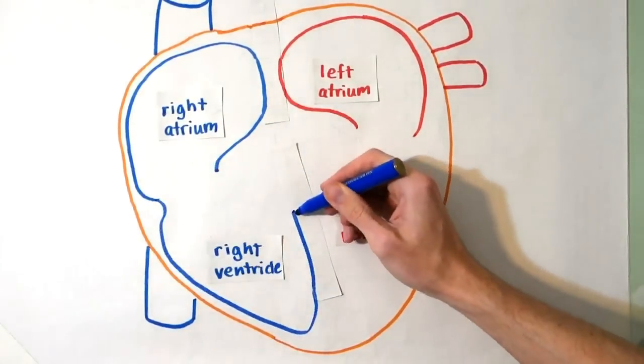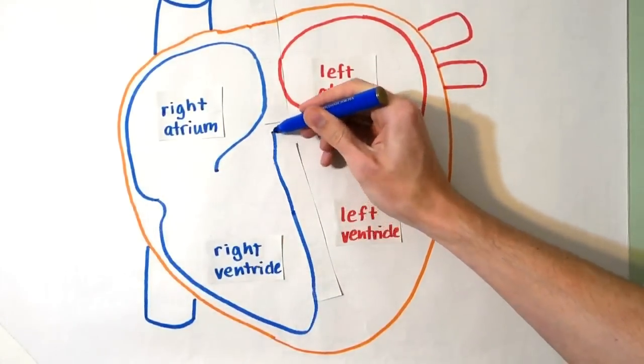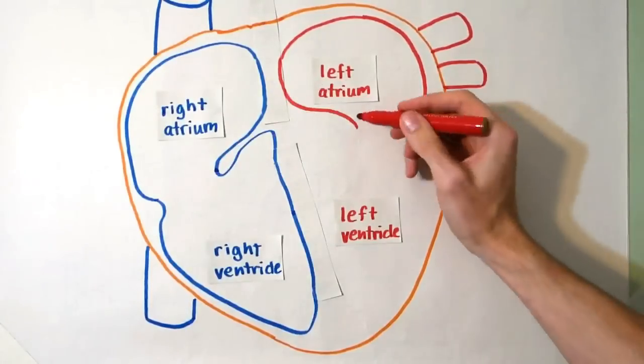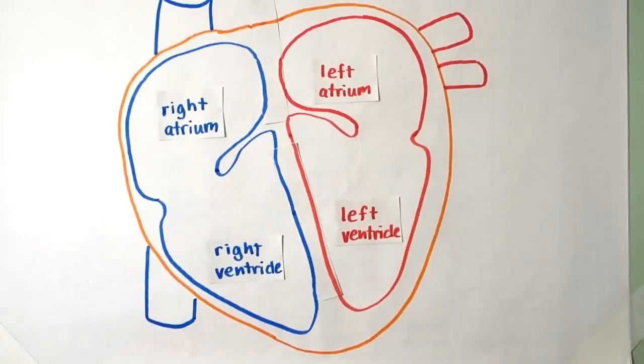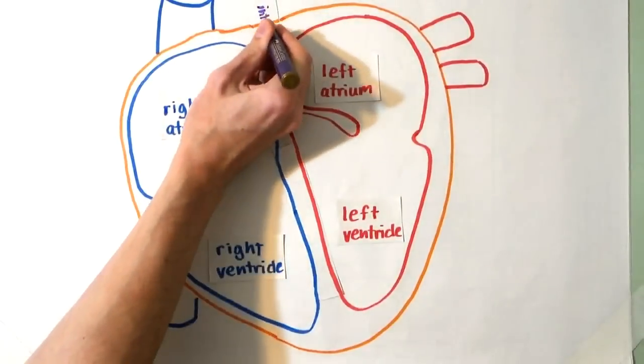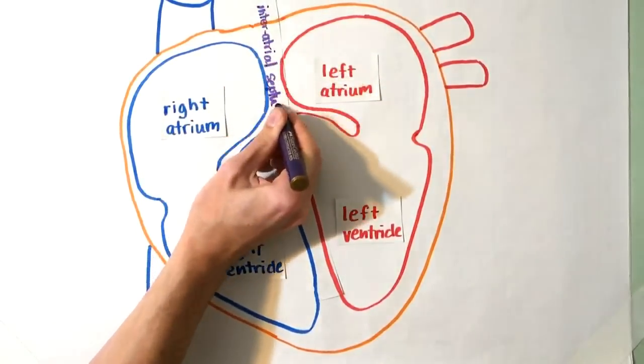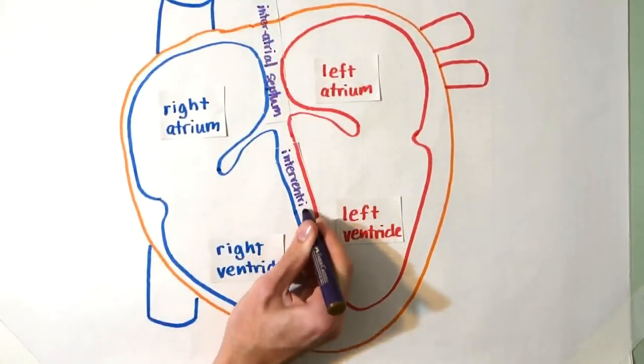The ventricles act as strong pumping chambers that push blood out of the heart. The chambers are separated by dividing walls called septum. The interatrial septum separates the atria, and the interventricular septum separates the ventricles.